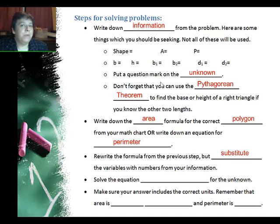Rewrite the formula from the previous step, but substitute the variables with the numbers. So all these numbers we wrote up here, those are now going to go into the formula. Solve the equation algebraically for the unknown and make sure your answer is in the correct format. Area is units squared and perimeter is units. So let's go ahead and try some examples.